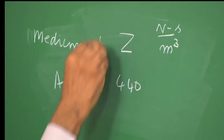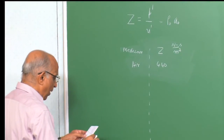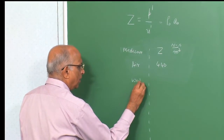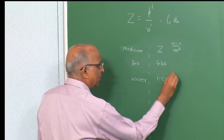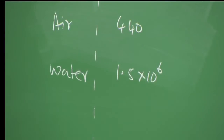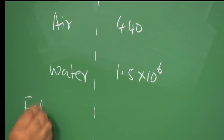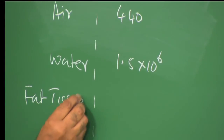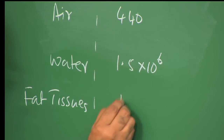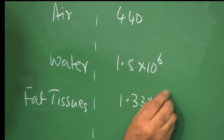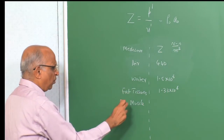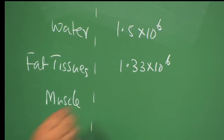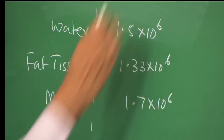Let me give a few values. For water, the value is around 1.5 × 10⁶ N·s/m³. For fat tissues in the body, the value is 1.33 × 10⁶, and for muscle — we are talking of human beings, tissues and muscle — the value is around 1.7 × 10⁶ N·s/m³.